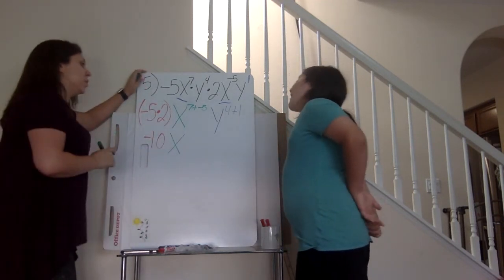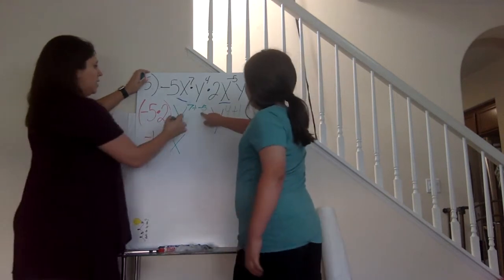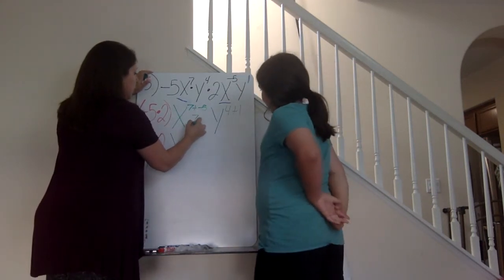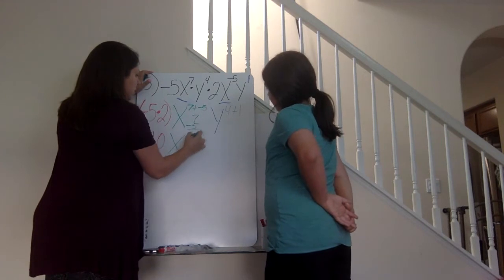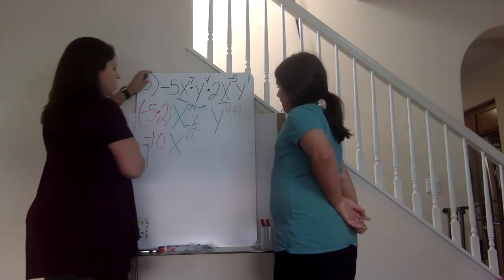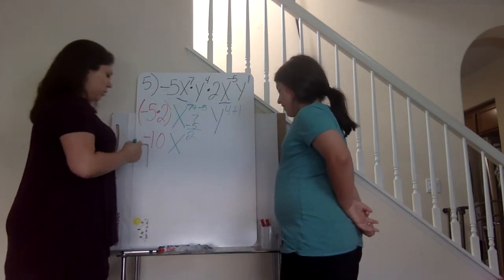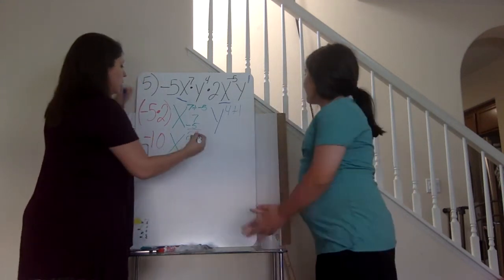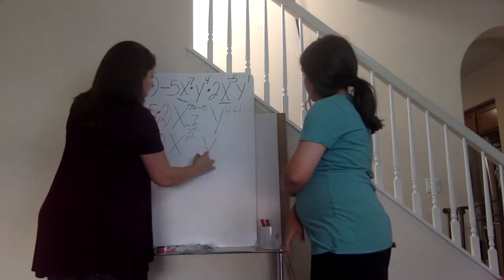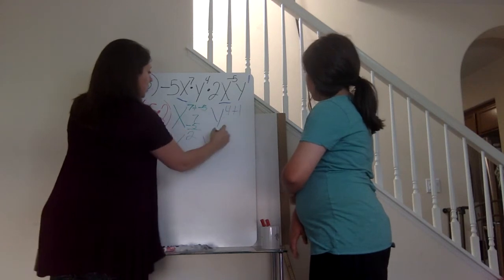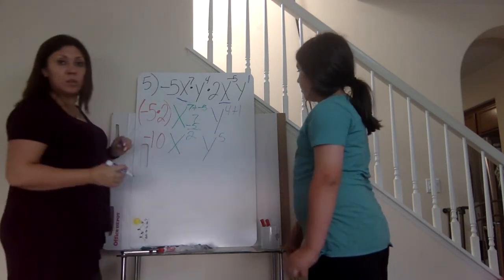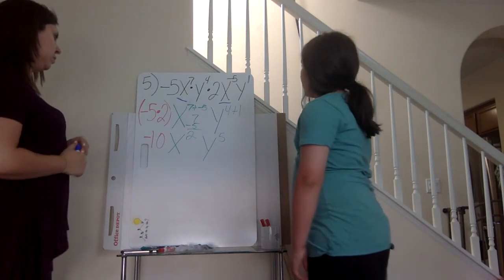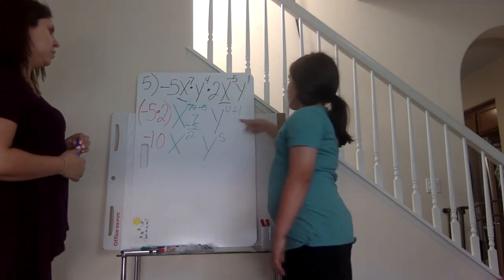It's not going to be negative — wait, yeah, because this one's less than that one. Yes, so I'm going to subtract: seven minus five equals two. So we're going to have a two and it's not going to be negative. And my y is going to be five, because four plus one is five. And it's going to be positive because these are not negative.